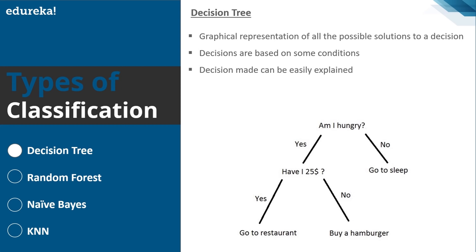A decision tree is a graphical representation of all possible solutions to a decision. The decisions made can be explained very easily. For example, should you go to a restaurant or buy a hamburger? Starting from the root node: are you hungry? If not, go back to sleep. If yes and you have $25, go to the restaurant. If you're hungry but don't have $25, just buy a hamburger.